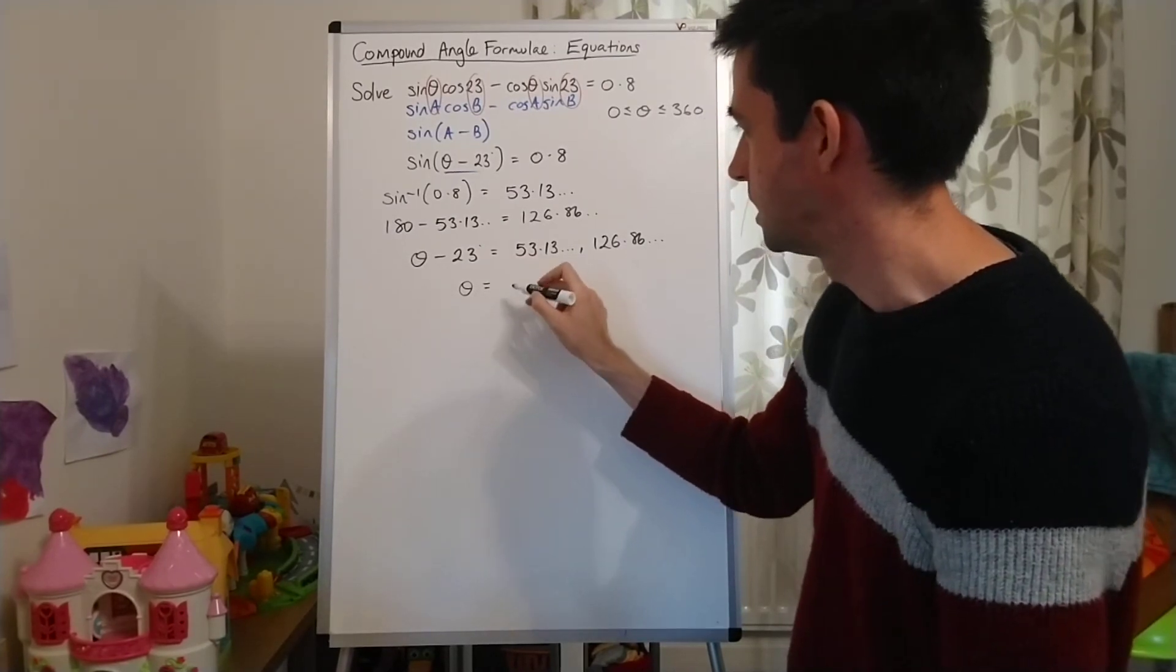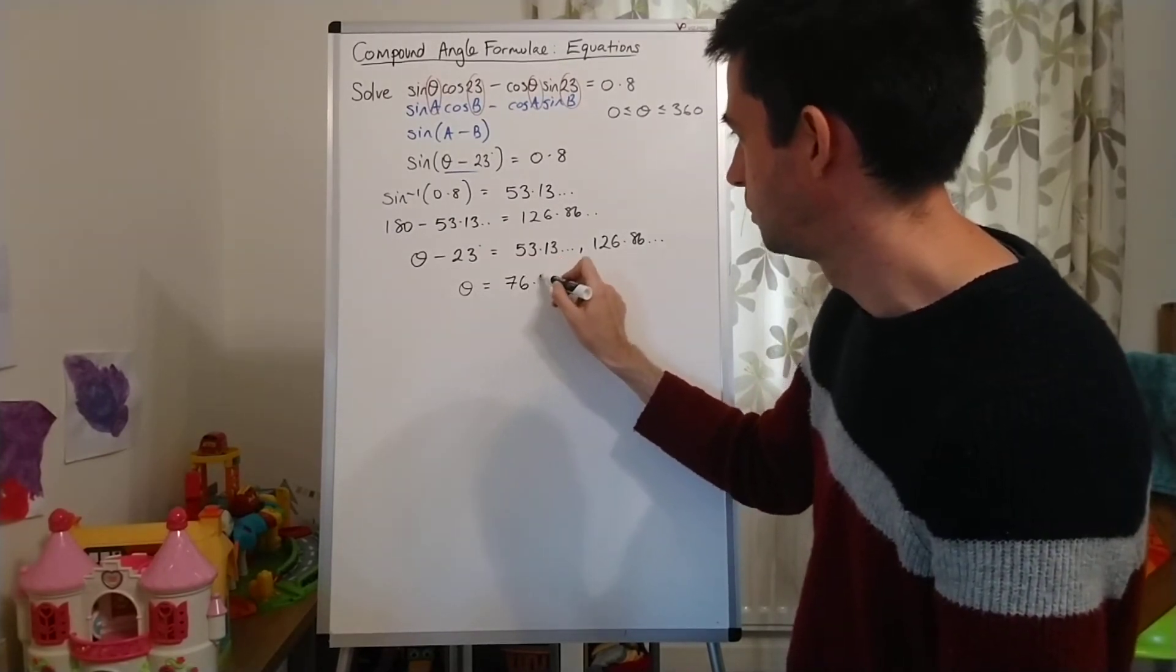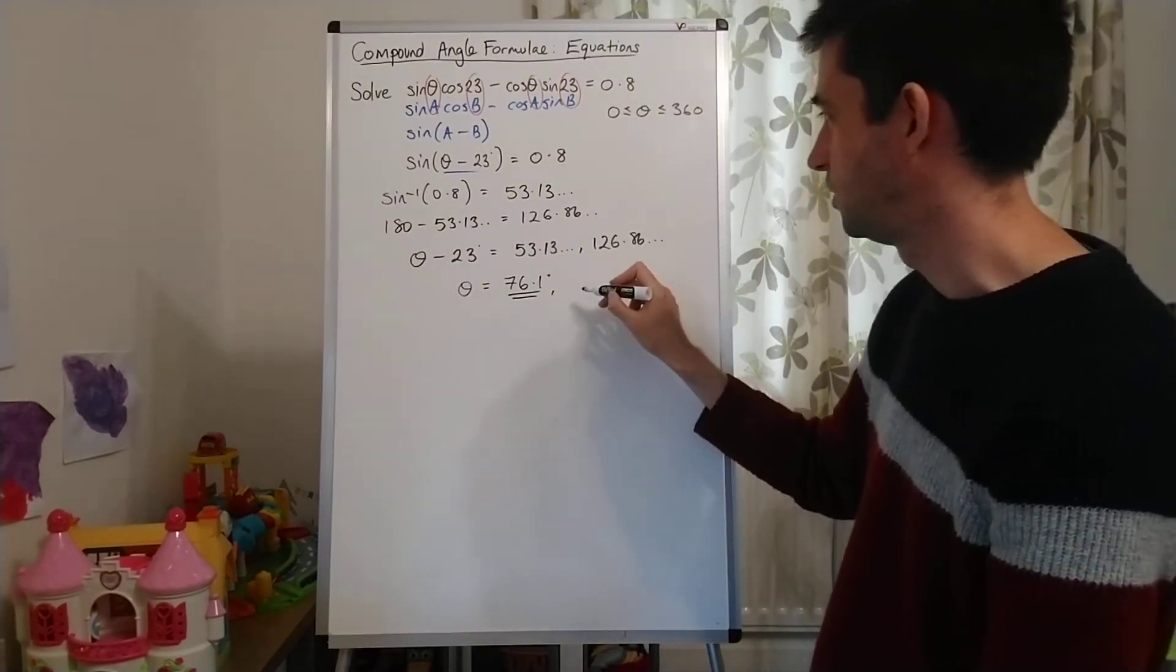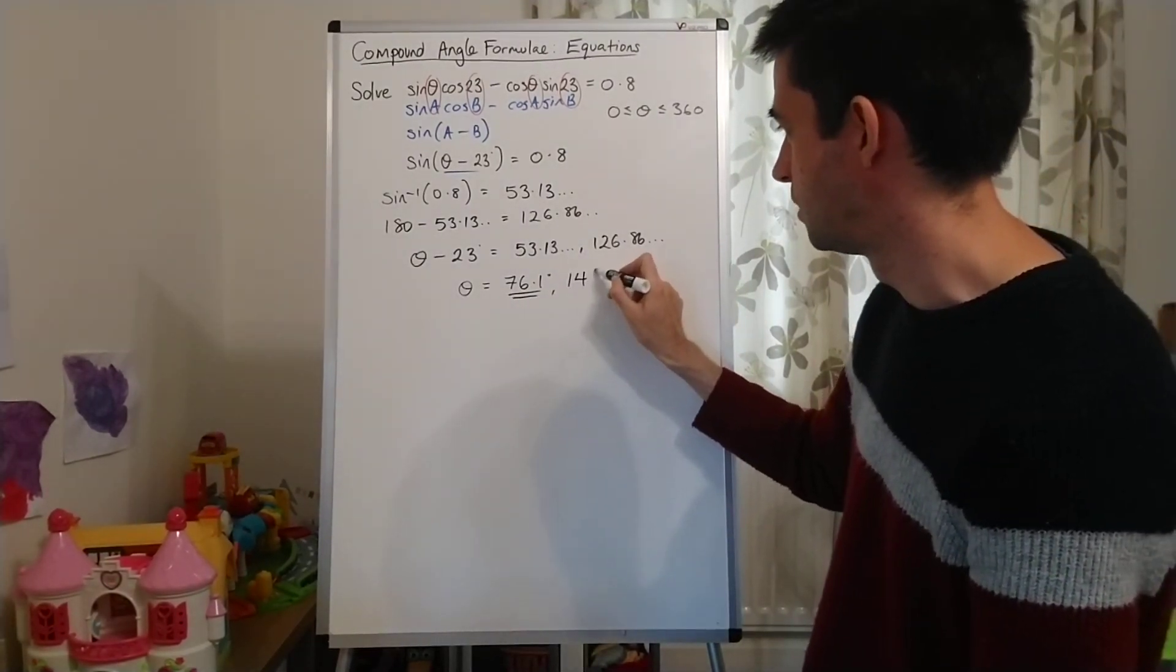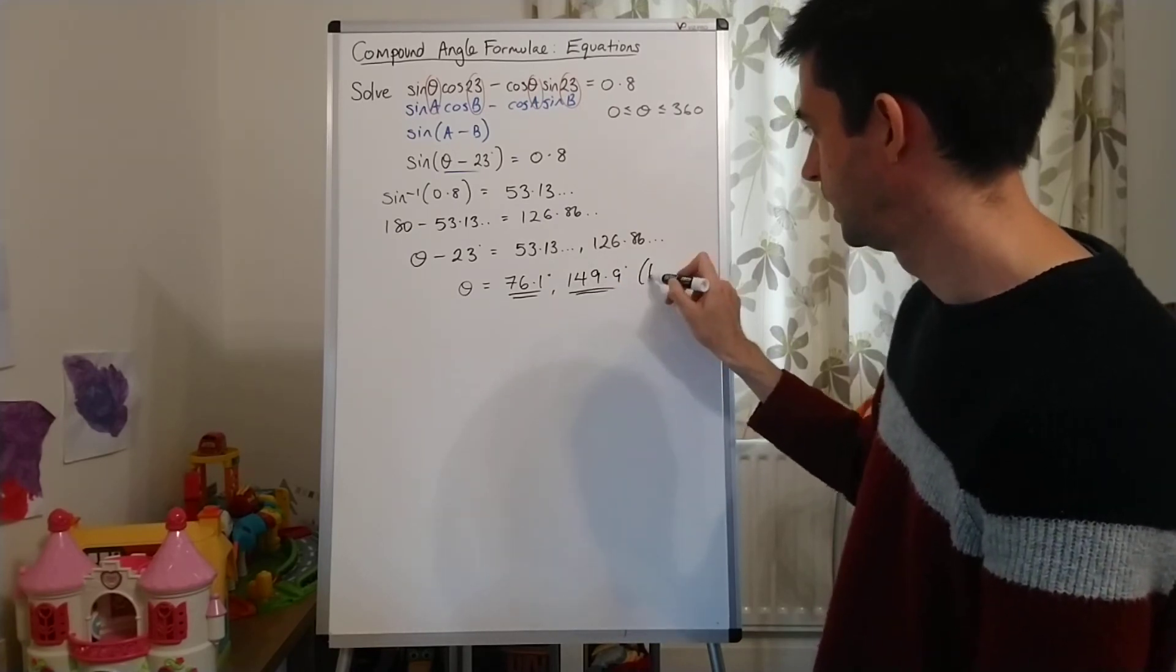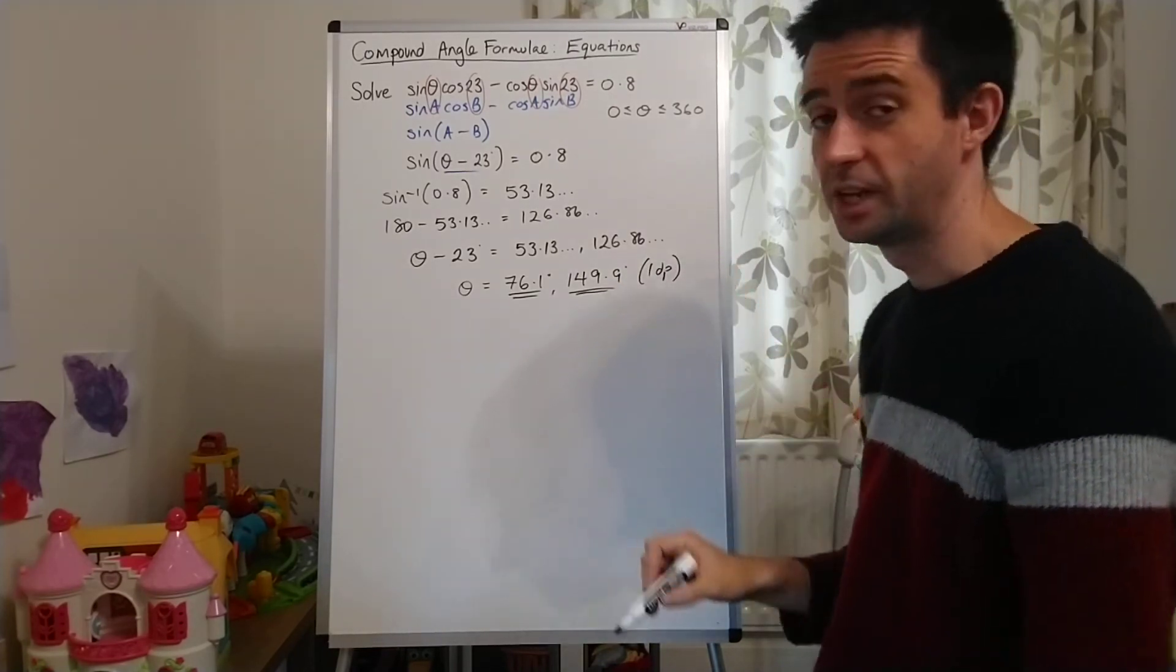it gives me that theta is 76.1 degrees to one decimal place and adding 23 to this one, 149.9 degrees, again, to one decimal place.